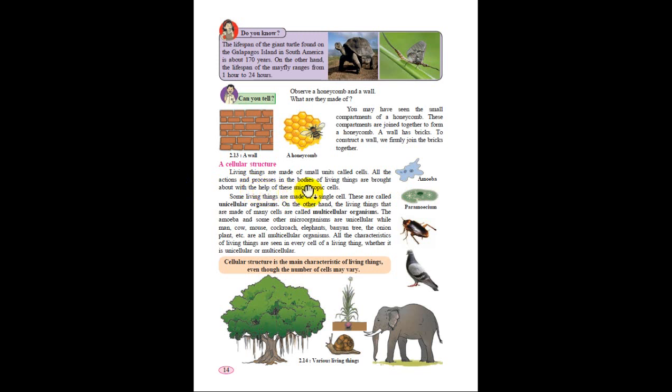All the actions and processes in the bodies of living things are brought about with the help of these microscopic cells. Some living things are made up of a single cell and these are called unicellular organisms. For example, amoeba. On the other hand, organisms made up of many cells are called multicellular organisms, like us.